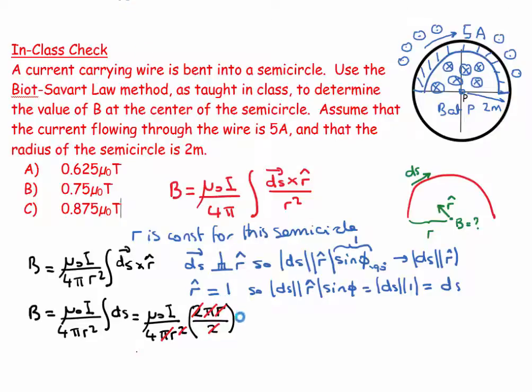So I get that this equals μ₀ times my current, and my current I see is 5 amps, 5 over 4 times r, and my r is 2. So this is 5 over 8 μ₀ tesla.